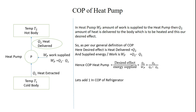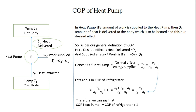Now, let's add 1 to the COP of refrigerator. COP of refrigerator = Q1 / (Q2 − Q1). Solving: (Q1 + Q2 − Q1) / (Q2 − Q1) = Q2 / (Q2 − Q1), which is nothing but the COP of heat pump. Therefore, COP of heat pump = COP of refrigerator + 1.